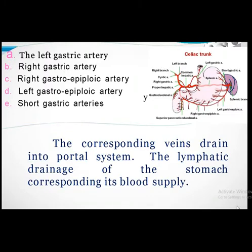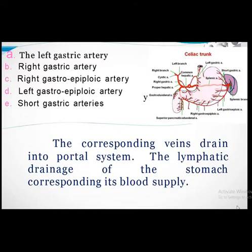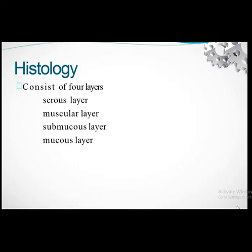The arterial supply is important for surgical planning. The right gastric artery supplies mostly the right side of the stomach; the left gastric artery, left gastroepiploic, and short gastric arteries from the splenic artery supply the major portion of the stomach. The lymphatic drainage runs along the vessels. Histologically, the stomach has a serous layer, muscular layer, submucous layer, and mucous layer.